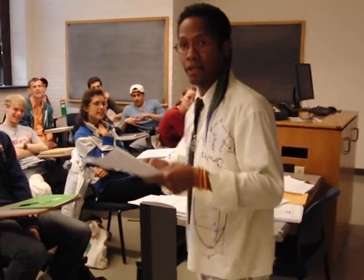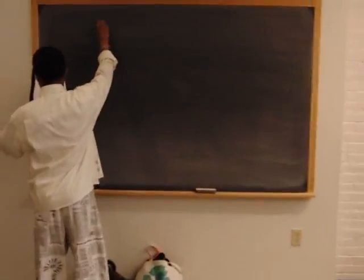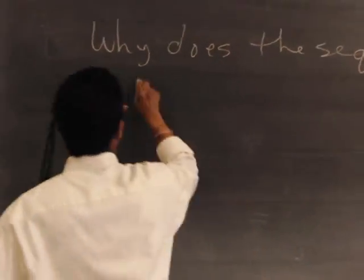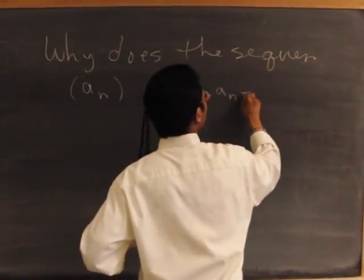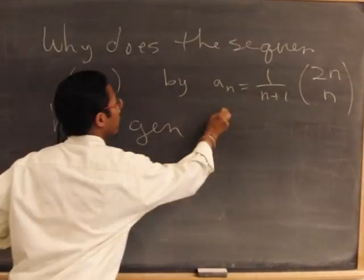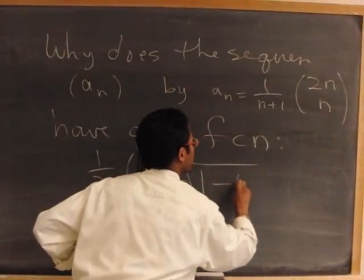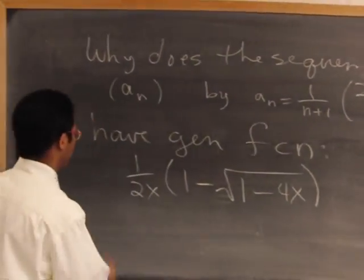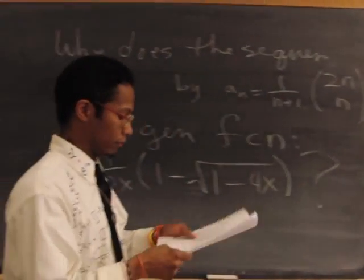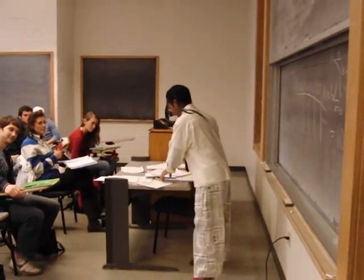So let me just leave you with a question on my mind: why does the sequence a_n given by a_n = (1 / (n+1)) * C(2n, n) have the generating function — the beautiful, awesomely beautiful generating function — (1 - sqrt(1 - 4x)) / 2? I'll leave you with that question. Or better yet, take-home exam: combinatorics.